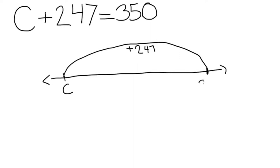After jumping 247 to the right, you will land on 350. Why 350? Look back at the equation. It says some number C increased by 247 is 350. You are now 247 units away from your variable C and on the number 350.